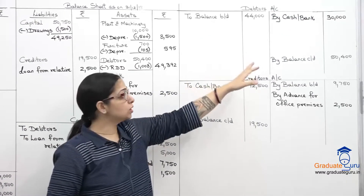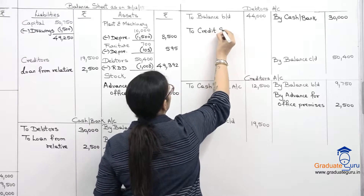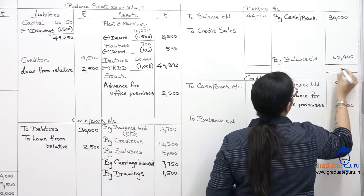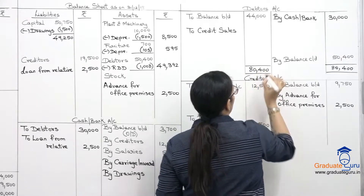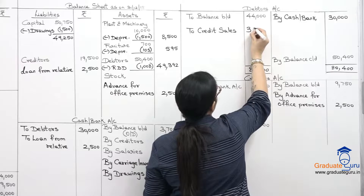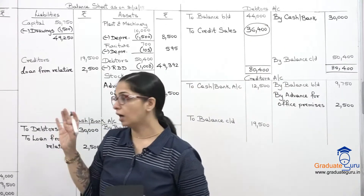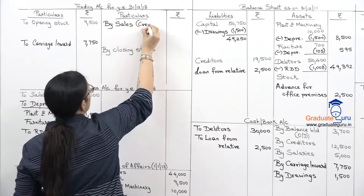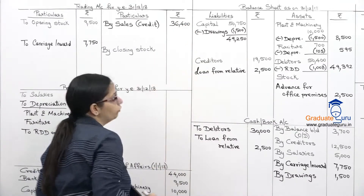Now we close the dators account. We have opening balance, cash received, and closing balance — what is missing is credit sales. Credit side total is 80,400. Subtracting debit of 44,000, we get credit sales of 36,400. This goes to the trading account as by sales 36,400. There are no cash sales mentioned, so all sales are credit sales.